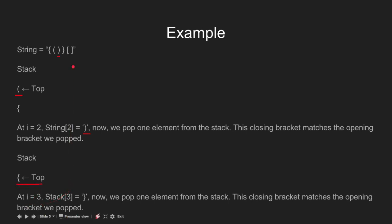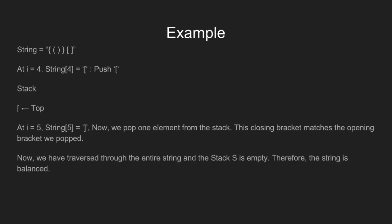At i equal to 3 we have a closed curly bracket. We pop one more element from the stack. This closing bracket also matches the opening bracket we popped — these two match. So we continue our algorithm. At i equal to 4 we have an opening square bracket, so we push it into our stack. Our stack just has an opening square bracket at the top. At i equal to 5 we have a closing square bracket, so we pop one more element from the stack. This closing bracket matches the opening bracket we just popped.